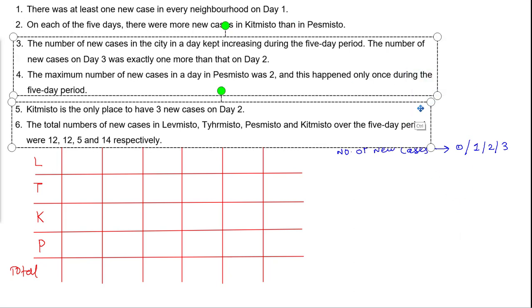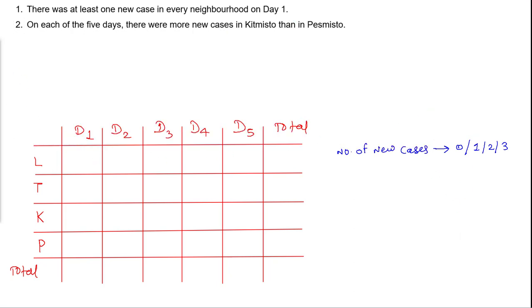Let's have a look at statement number 1 and statement number 2. Statement number 1 says that there was at least one new case in every neighbourhood on day 1. So on day 1, the sum is going to be at least 1+1+1+1, meaning the sum is going to be at least 4. There is no neighbourhood in which 0 new cases were recorded.